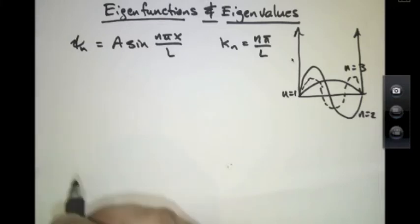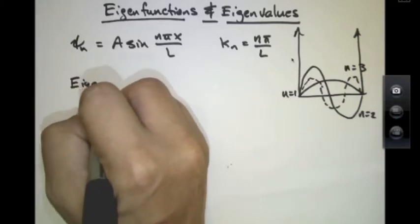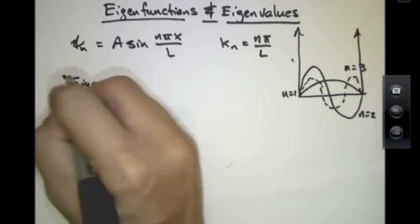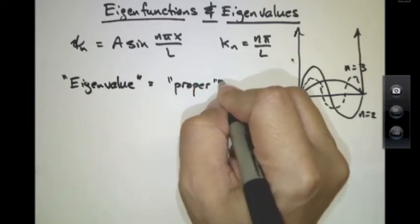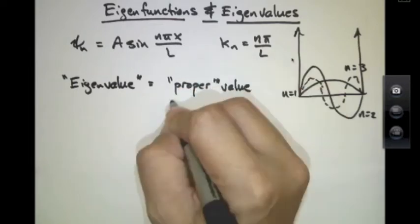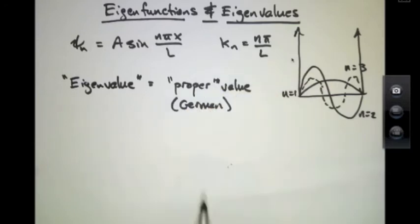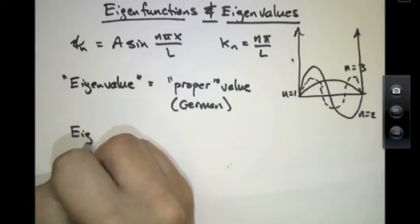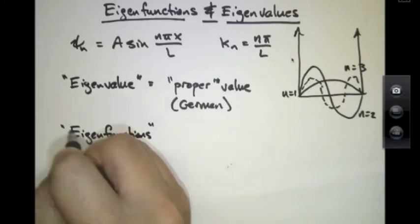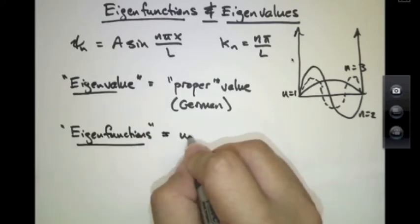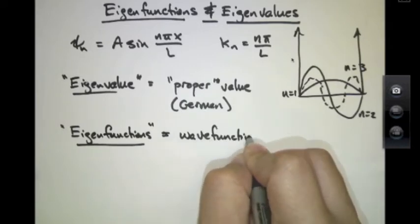Well, the German word eigenvalue, that is German for proper value. And it's just another term for the discrete values that are allowed for the energies or the wavelengths inside the solution of the infinite potential well. The eigenfunctions are the wavefunctions that go along with these particular eigenvalues.